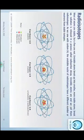Radioisotopes: most atoms are stable, but a few are not. Unstable atoms break up into smaller, more stable atoms. During this breakup, radiation is released in a process called radioactive decay. Unstable atoms are called radioisotopes. As we saw with carbon-14, the unstable nuclei of radioisotopes have a different number of neutrons from stable isotopes.